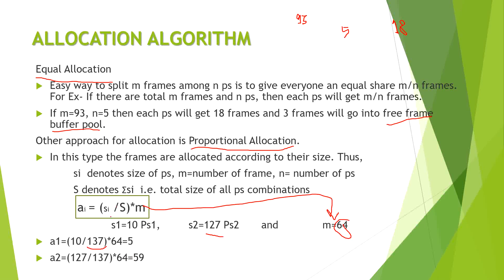Proportional to the size of each process, we calculate the number of frames. For the first process of size 10: (10/137) × 64 ≈ 5 frames. Since the total is 64 frames and the first process gets 5, the second process gets 59 frames. The second process is larger in size, so it gets more frames. This is known as proportional allocation.